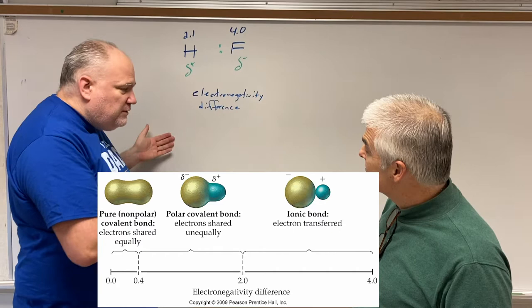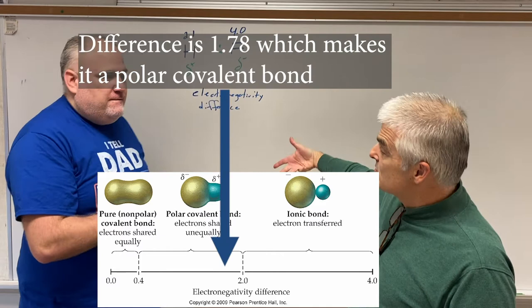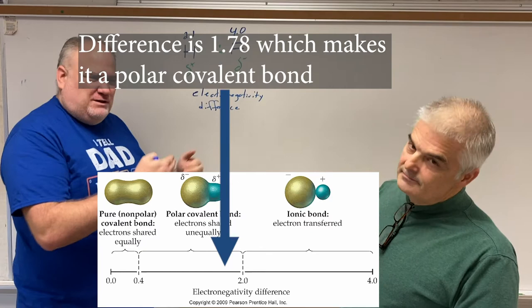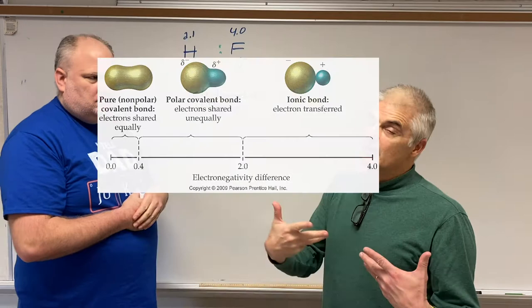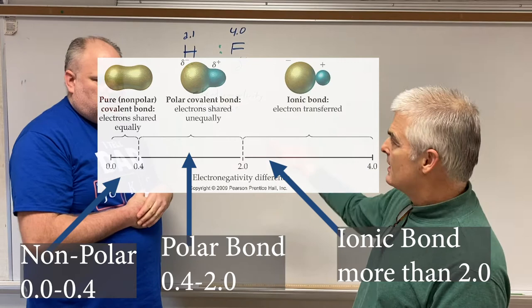Now, understand that whenever you have an electronegativity difference, we have these three variances. 0 to 0.4, 0.4 to 1.7, and 1.7 to 4.0. So, this is kind of in the range of a little bit more than just polar, but there is some flexibility with this. So, whenever you have a connection between an atom, you can determine if it's a polar bond or, actually, if you notice here, a non-polar bond, a polar bond, or an ionic bond, all right?